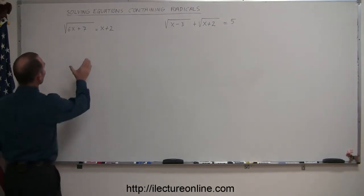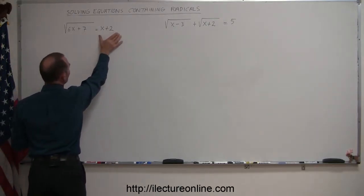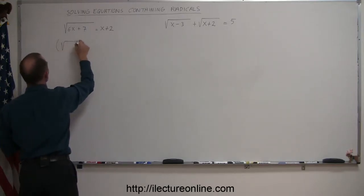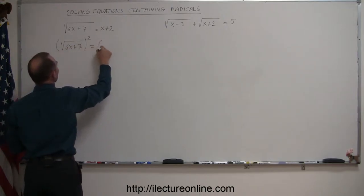So let's go through with these examples. On the left side, again, we have the radical on one side, everything that doesn't have a radical on the right side, so we can simply square both sides. So we take the left side and square it. And we take the right side and square it.